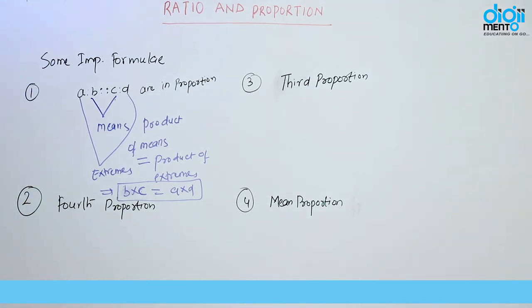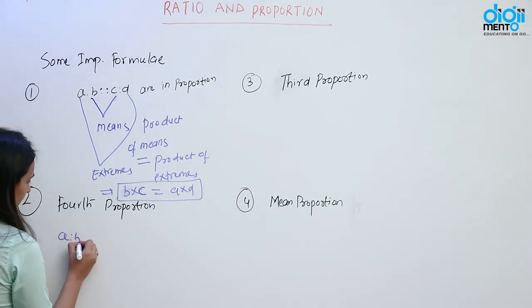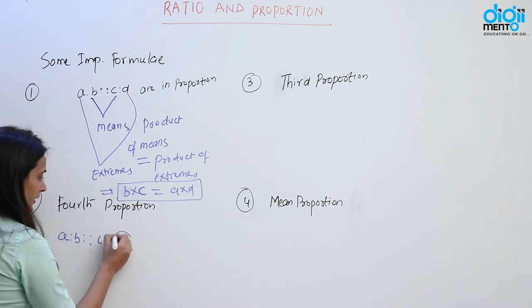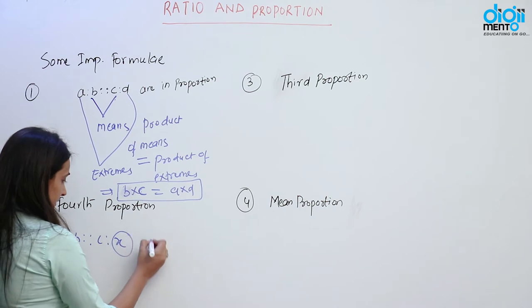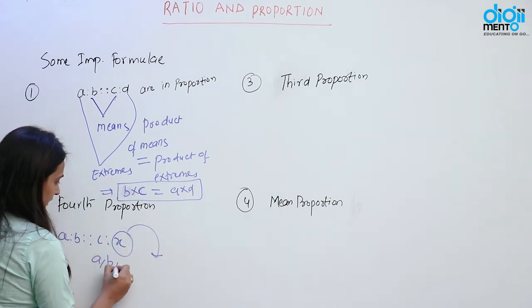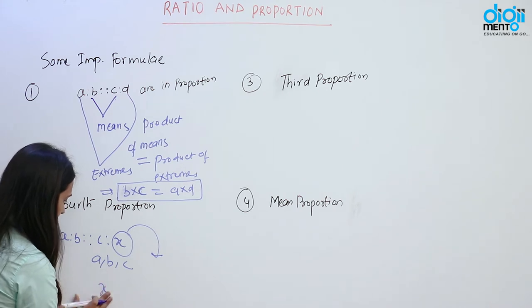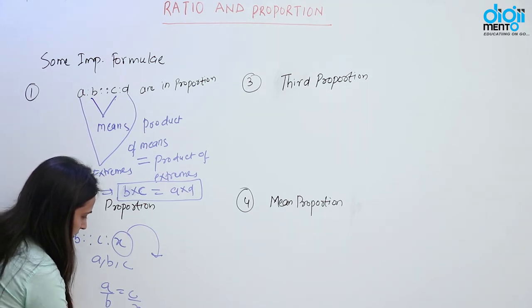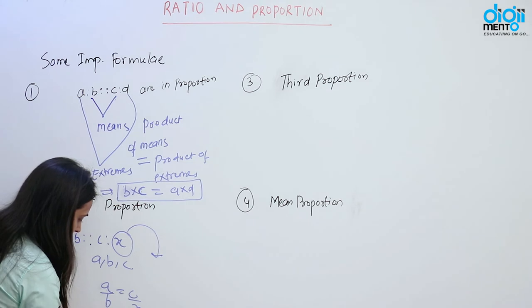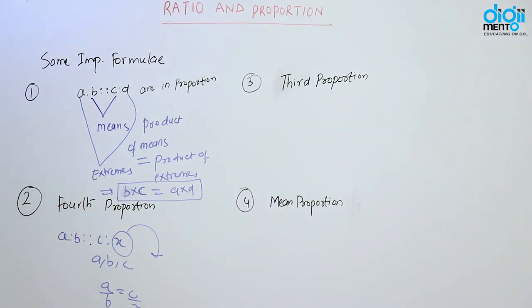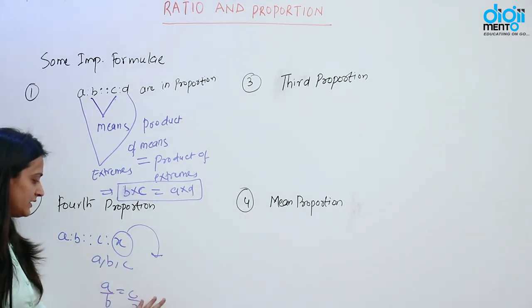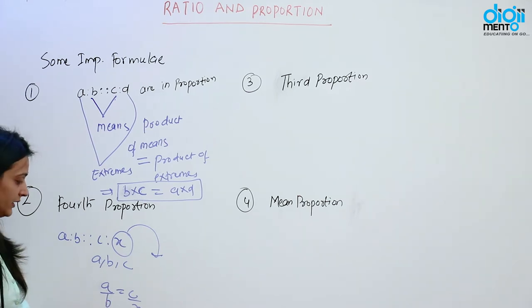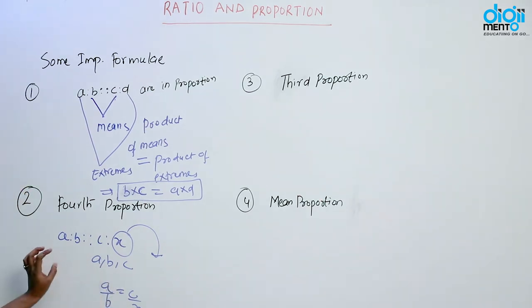Now the next term is fourth proportion. How will we find the fourth proportion? A ratio B as C ratio X — X is the fourth proportion of A, B, C if A by B equal to C by X, or you can say X is equal to B into C by A. Remember this formula — it will help you to find the fourth proportion. Hame bataya gaya hai X jo hai A, B, C ka fourth proportion kab hoga? Jab A by B jo hai equal hoga C by X ke. Aur yahan se hame X ko find out kar sakte hain: B into C by A.